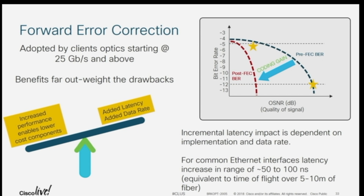Through the magic of coding gain, all of a sudden you're back down and operating in a fantastic error-free zone. Of course, that's all great and good, but it adds some latency. You're doing some compute that adds a little bit of latency — in the things I'm talking about here, 50 to 100 nanoseconds, which is equivalent to about 5 to 10 meters of transmission over fiber.